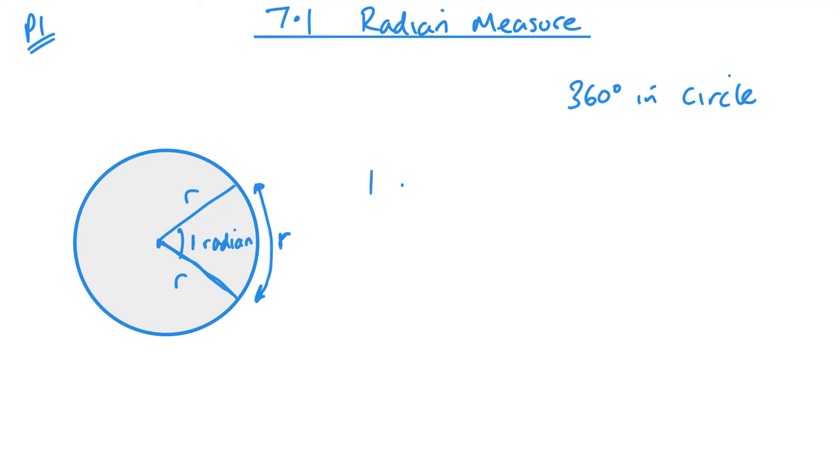So one radian is when the arc length is the same size as the radius. Now, we often call this, so I'll put it in full here, one radian. This can also be written as one rad in short or sometimes one. And it's kind of like a little C or half a circle for the degrees, if you think of it that way.